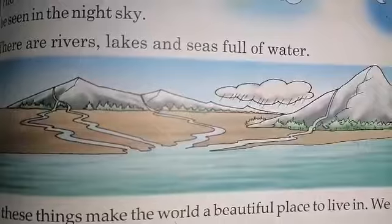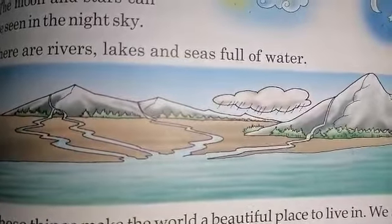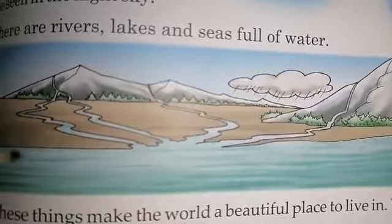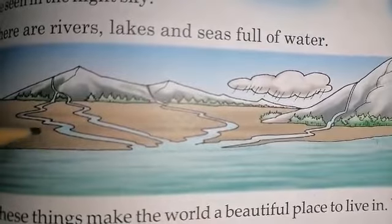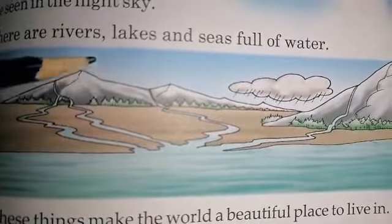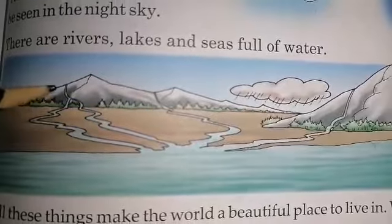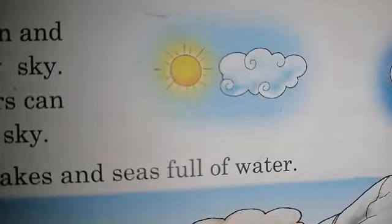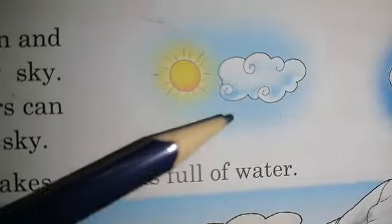So in the end, we can say that our world is very, very wonderful. In our world there is land, water and the sky. On the land, we see mountains and forests. In daytime, you can see the sun and the clouds.